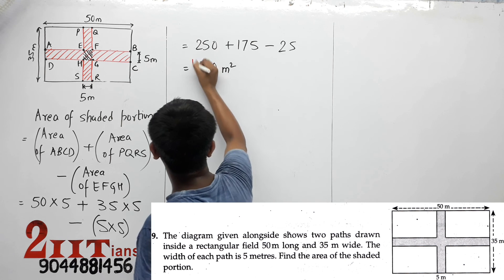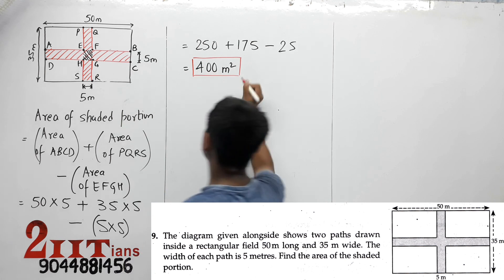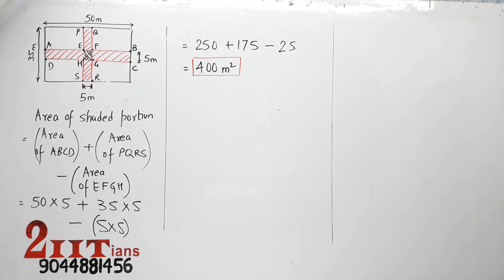400 meter square is the shaded area which was required. So this question is done now.